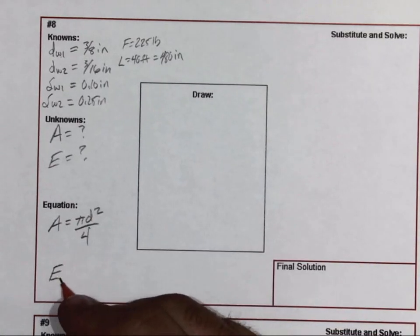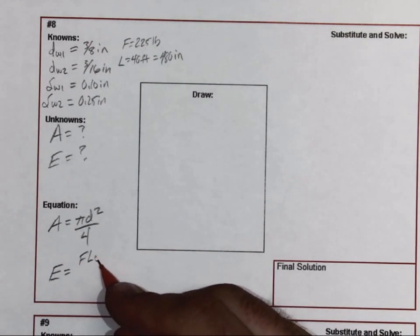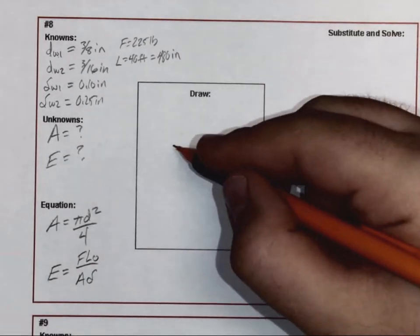Equations: area is π times diameter squared over 4, and then the modulus of elasticity, let's go ahead and use force times the original length divided by area times the amount of stretch.